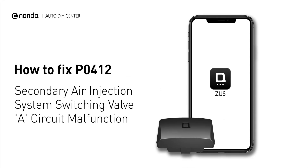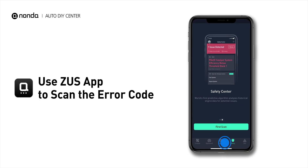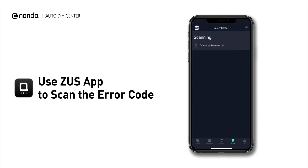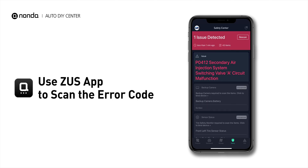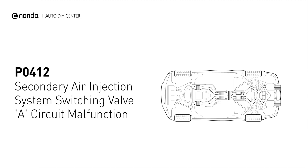If you are getting a PO412 error code, this video is going to show you two practical solutions to fix the error code at home. Use the Zeus app to scan your vehicle and see the error code PO412. It indicates that the engine control module got input from the air injection system driver that the air pump has a malfunction with an open or short circuit.